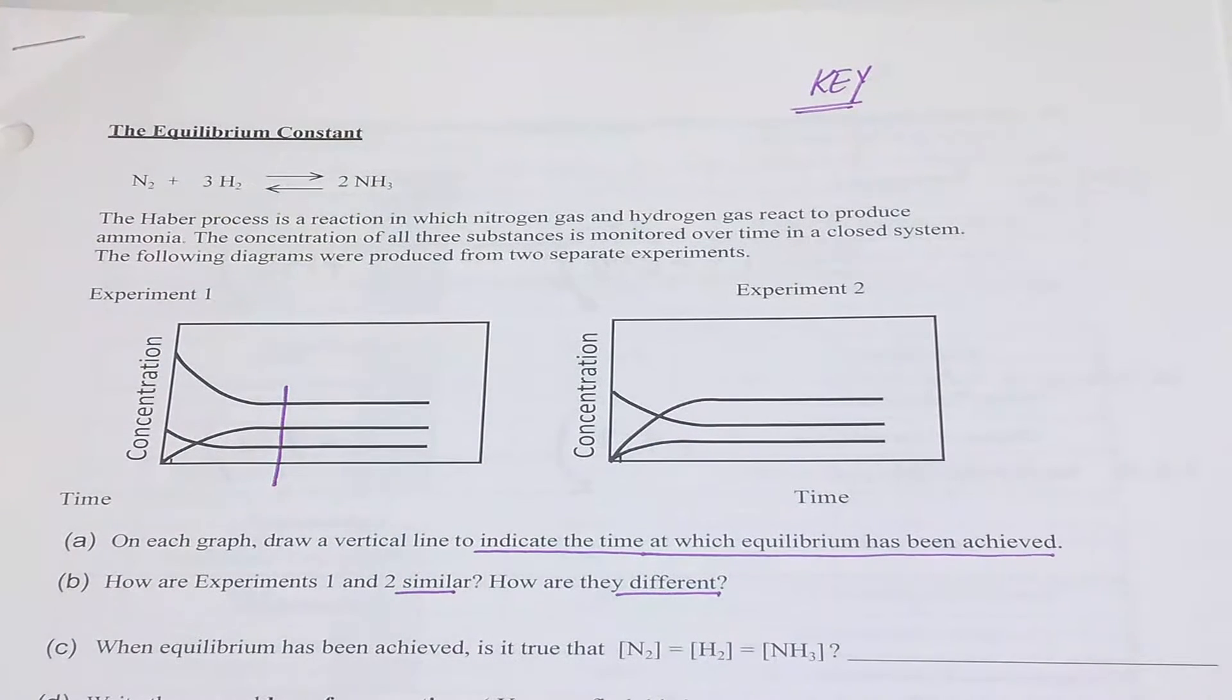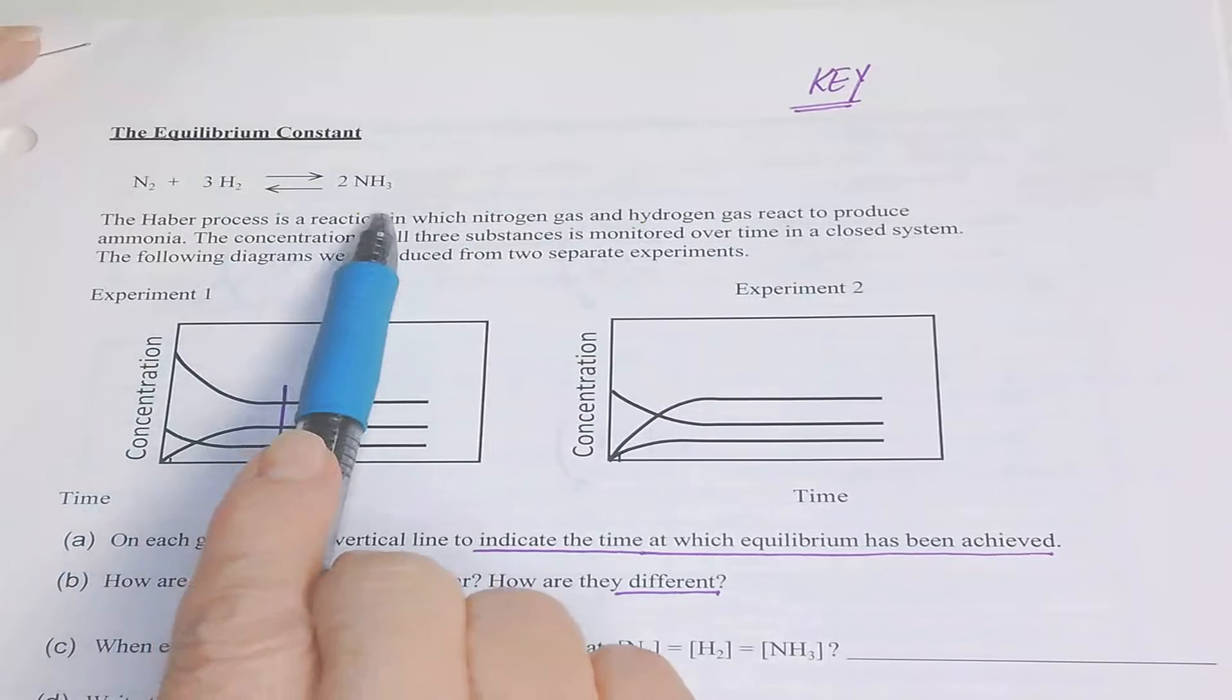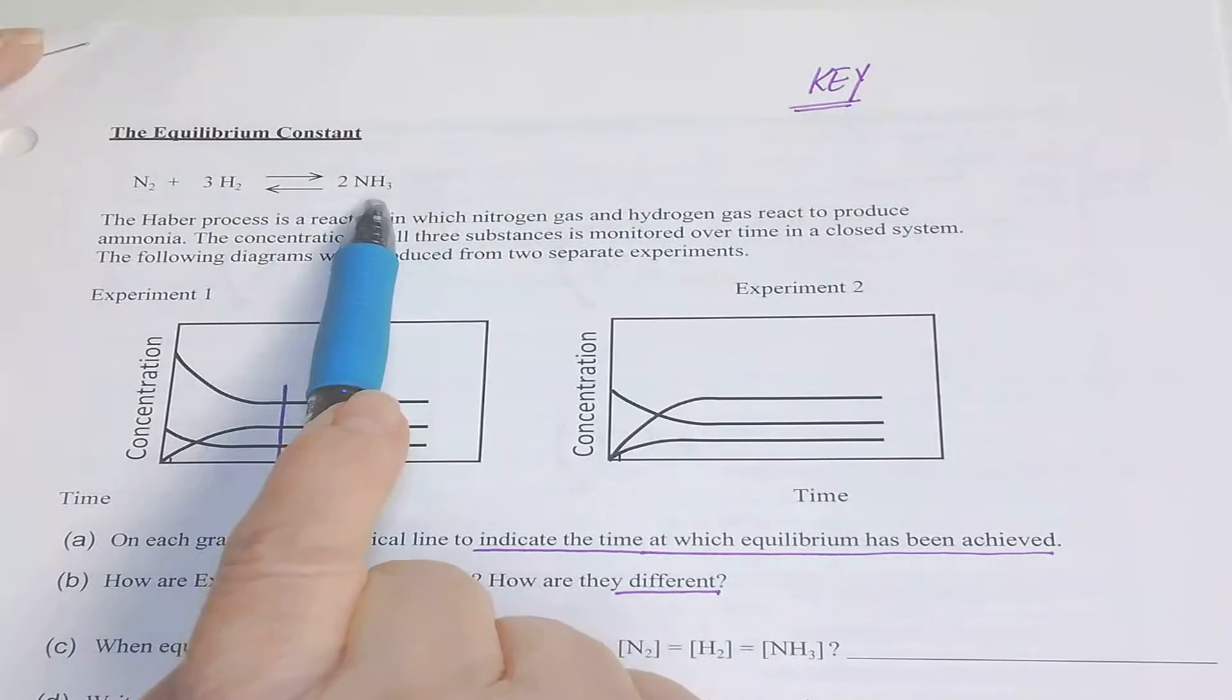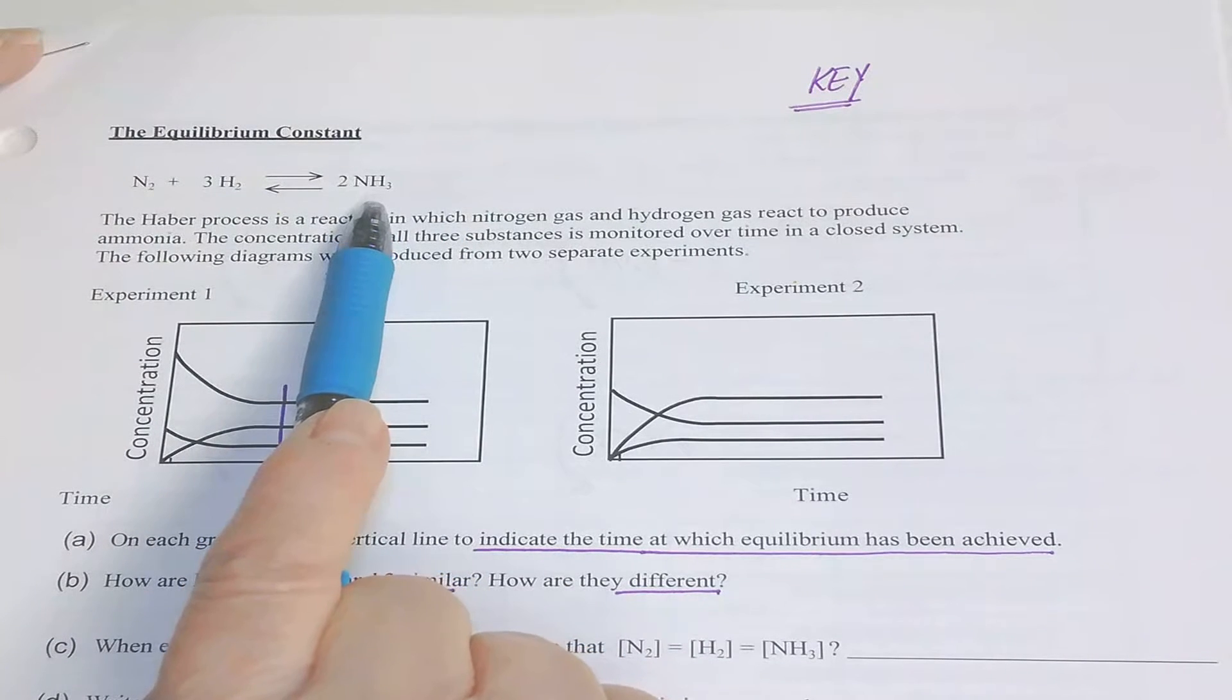If you look at the definition of the equilibrium constant in your book, it says that it's controlled by the law of mass action.